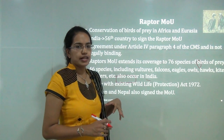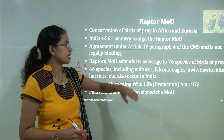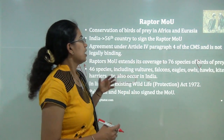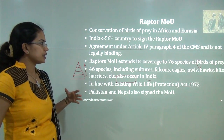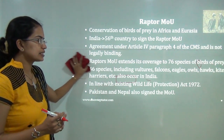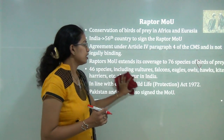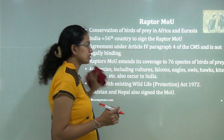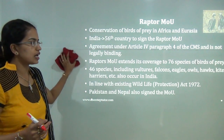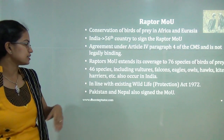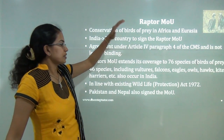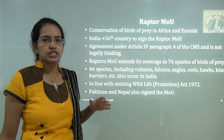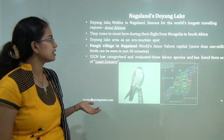India has also signed an MOU as the 56th nation for raptor conservation. Raptors are birds of prey commonly seen in Africa and Eurasia. This agreement covers 76 species of birds of prey, of which 46 species are found in India — including falcons, eagles, vultures, owls, hawks and kites. This is in line with the Wildlife Conservation Act 1972. Other neighbors of India that have signed this MOU include Pakistan and Nepal.